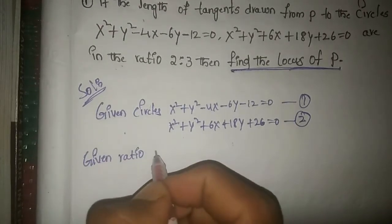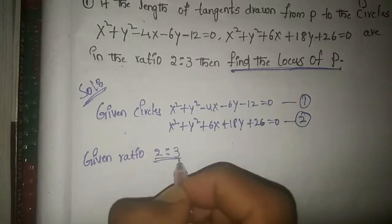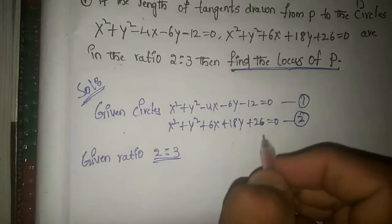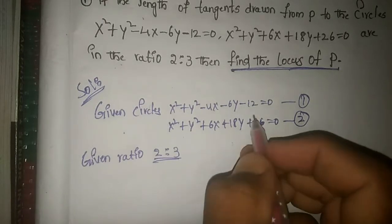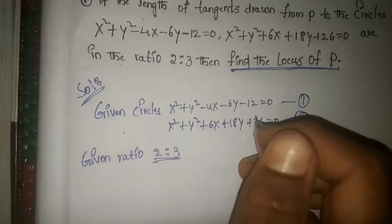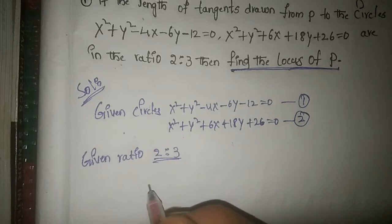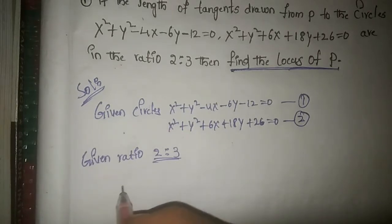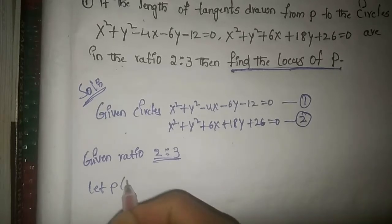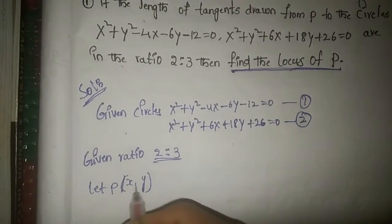The given ratio is 2:3. Let P = (x, y). We denote the length of the tangent from P to the first circle as PA and to the second circle as PB.